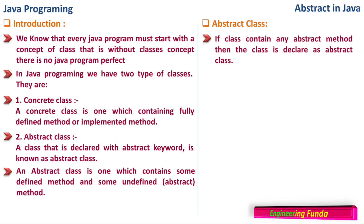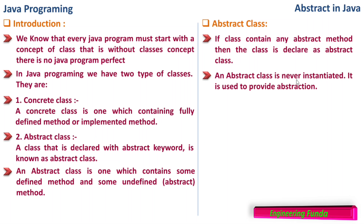If a class contains any abstract method — where abstract is just a definition without the implementation — then the class is declared as an abstract class. For a class to be abstract, we should have at least one abstract method. An abstract class is never instantiated; it is used to provide abstraction — that is, how a program should look, what methods are there, their signatures, names, and parameter types, without having the implementation.